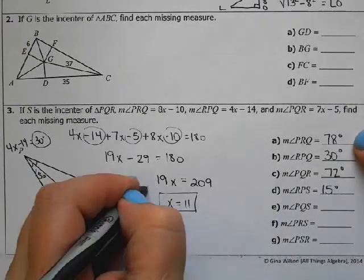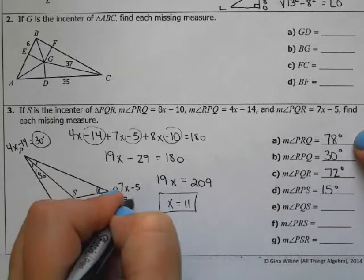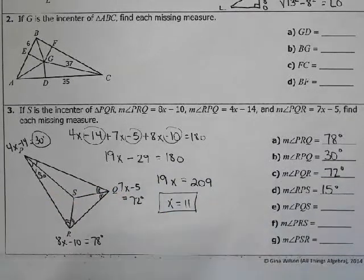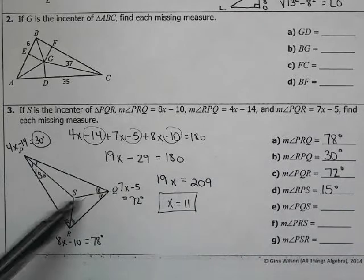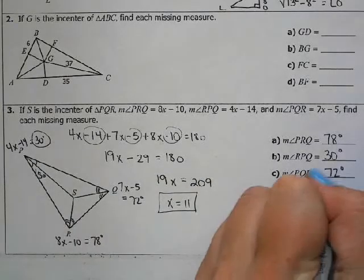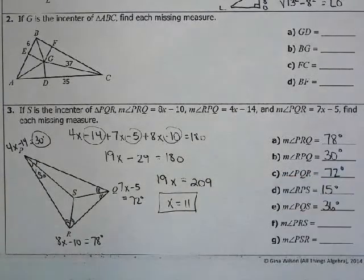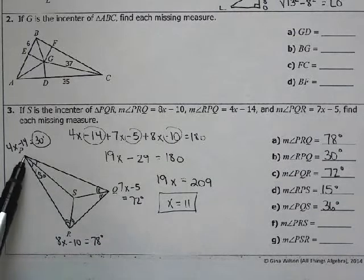PQS, half of 72, 36 degrees. PRS, half of 78, 39 degrees.